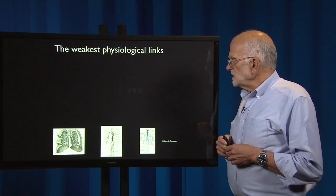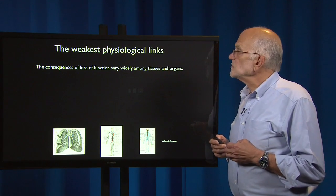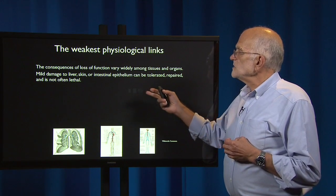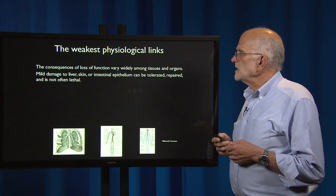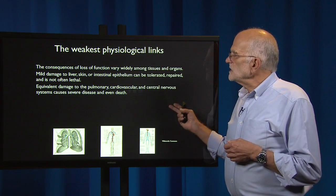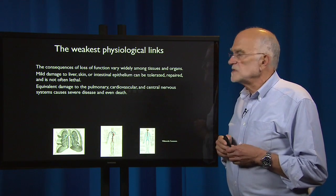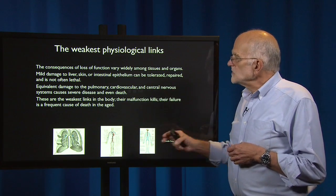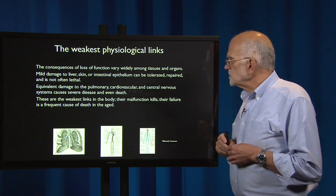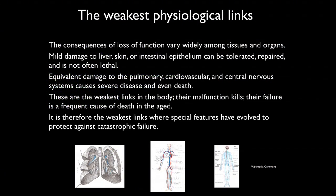So what are the weakest physiological links? The consequences of losing function vary widely among tissues and organs. Mild damage to liver, skin, or intestinal epithelium can be tolerated and repaired — it's often uncomfortable but not lethal. Equivalent damage to the pulmonary, cardiovascular, or central nervous system causes severe disease and even death. So these are the weakest links in the body; their malfunction kills, and their failure is a frequent cause of death. It is therefore at the weakest links where special features have evolved to protect against catastrophic failure.